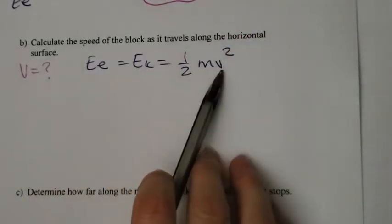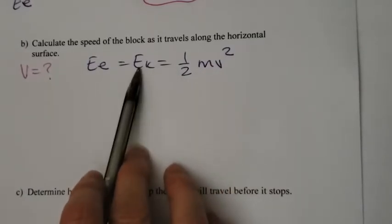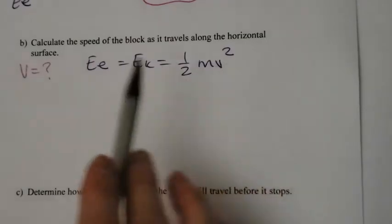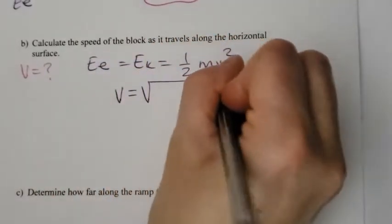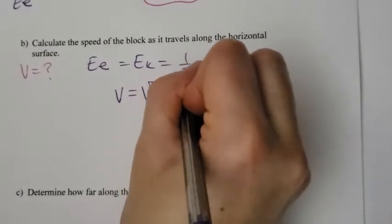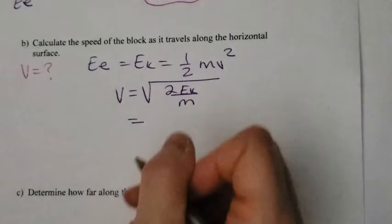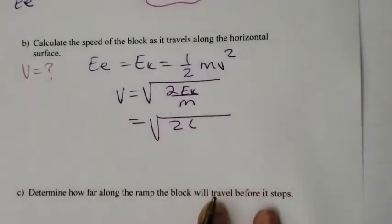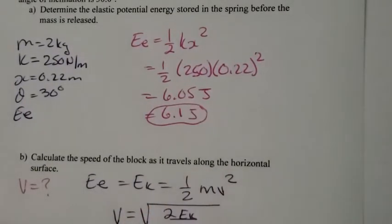If I want to get v all by itself, first thing I do is multiply by 2, then divide by m, and then take the square root. So v is equal to the square root of 2ek divided by m. We plug in what we know: the square root of 2 times—when I look back here, you don't take the rounded answer, you take the more accurate one, 6.05.